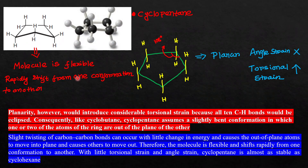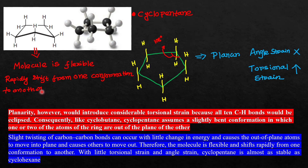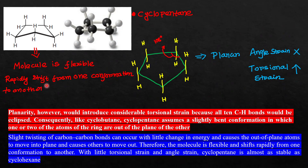This molecule is flexible and rapidly shifts from one conformation to another. In the next lecture, I am going to discuss the cyclohexane ring, which is the most important part of this topic in organic chemistry. Cyclohexane has two important conformations: the chair form and the boat form. Which is more stable and all those aspects will be discussed in the next lecture. If you have any doubts, ask in the comment section. Thank you for watching, and take care — bye bye.